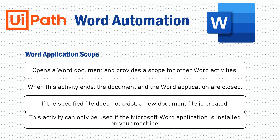Quick recap of the Word Application Scope: it opens a document and provides a scope for Word activities; when the activity ends, the document and Word application are closed. If the file doesn't exist, a new document is created only if the 'Create If Not Exist' property is true. Also, this activity can only be used if Microsoft Word is installed on your machine.